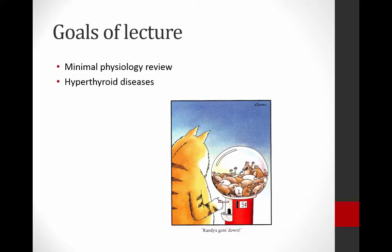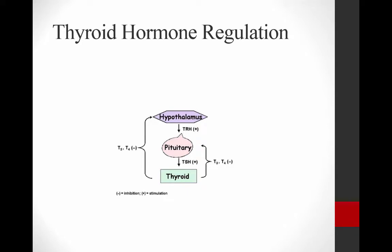What I'm hoping to do today is go through a minimal physiology review so that we're all on the same page as to what I believe are some of the important physiologic principles that underlie our understanding of thyroid diseases. Then we're going to be talking about hyperthyroidism. The first thing I'd like to do is remind everybody about how thyroid hormone is regulated, because this is going to be important when we talk about the diseases and how we test for hyperthyroid disease in the cat. If you look at the slide here, this just reminds us what the normal hypothalamic-pituitary-thyroid axis looks like.